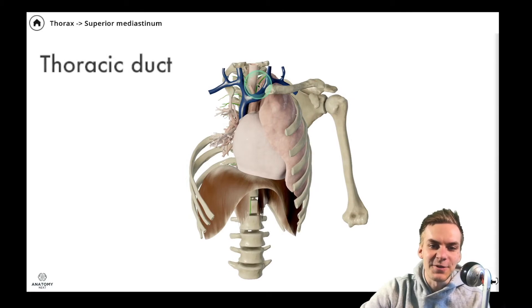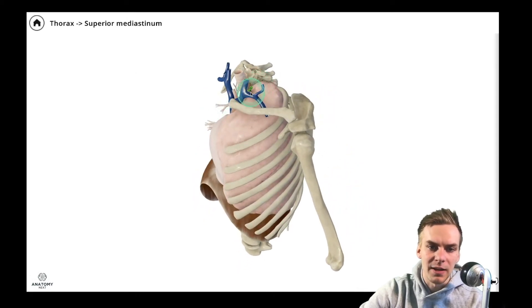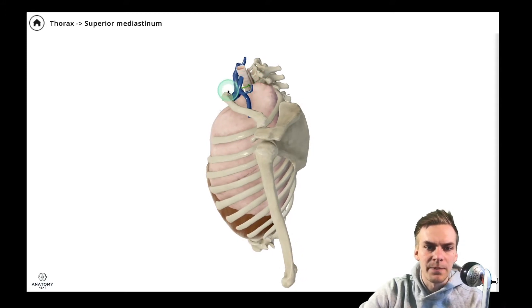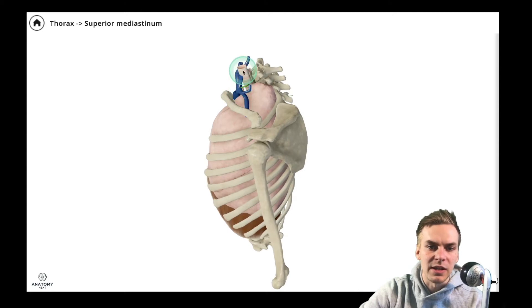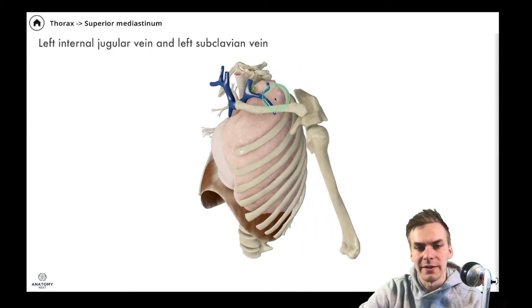And here in the green you can see the thoracic duct, which is the biggest lymphatic duct of the human body. And here you can see how it drains into the venous system here in the angle between the left internal jugular vein and the left subclavian vein.